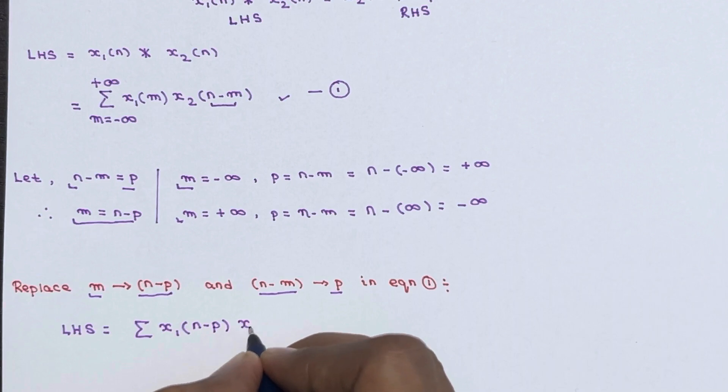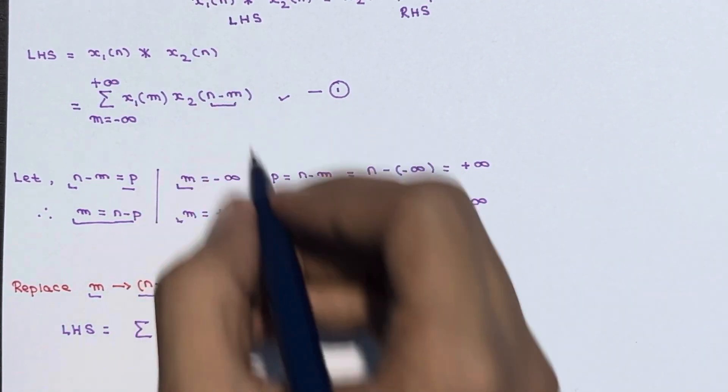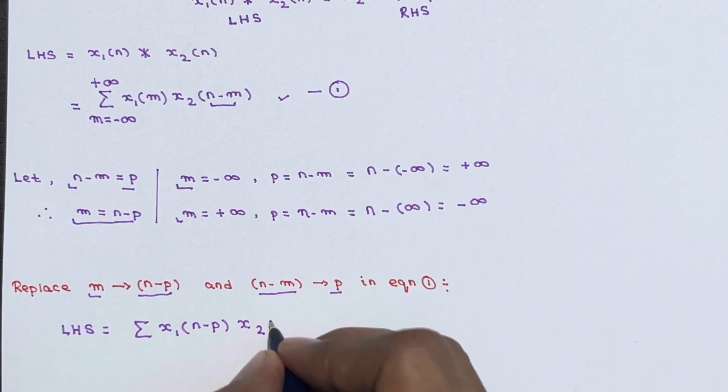Into x2 of, so n minus m is there in original equation, so here you have to replace with p.